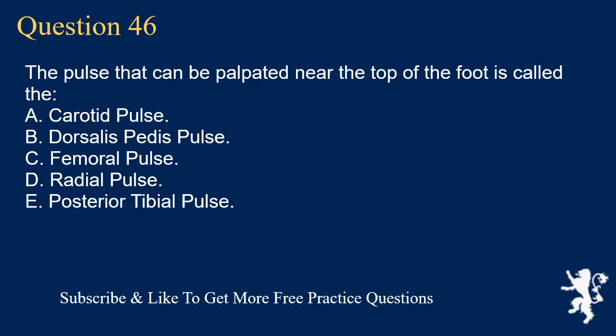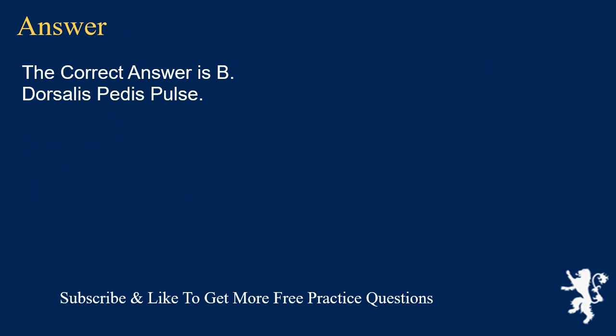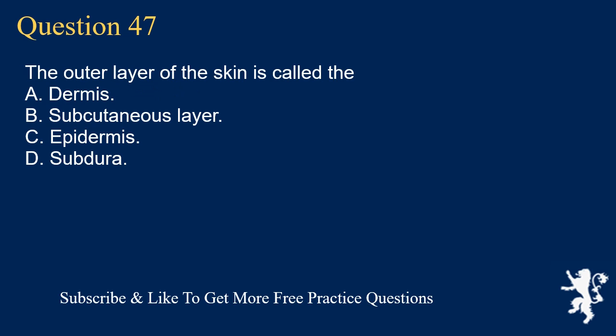Question 46. The pulse that can be palpated near the top of the foot is called the: A. Carotid pulse. B. Dorsalis pedis pulse. C. Femoral pulse. D. Radial pulse. E. Posterior tibial pulse. The correct answer is B. Dorsalis pedis pulse.